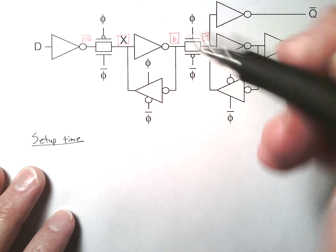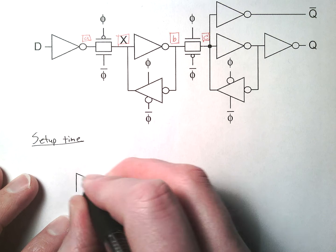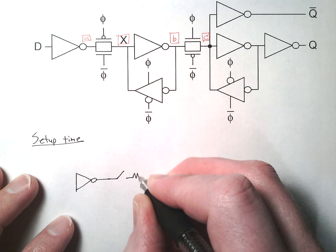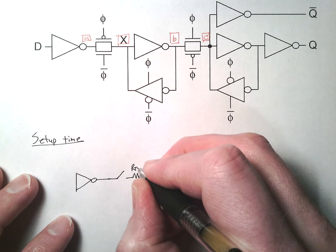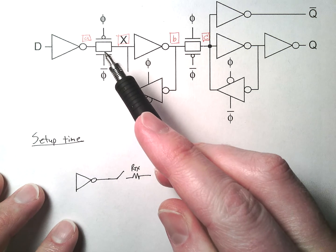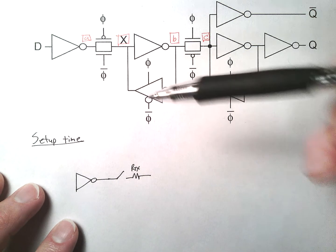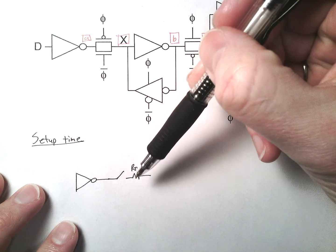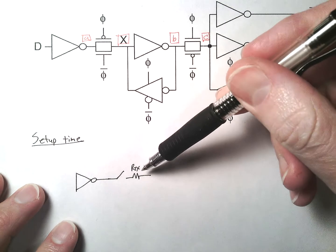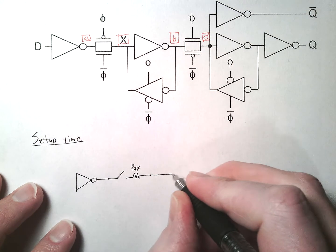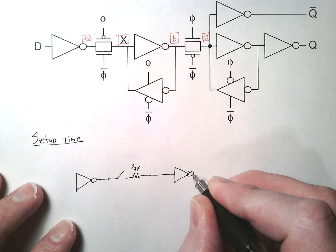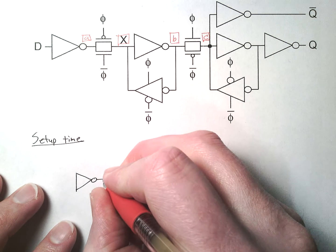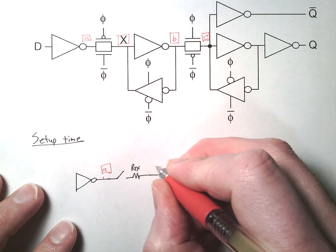I'm going to redraw this as a circuit that looks like this. We've got our original inverter, and then we have a switch and a resistor. This is our transmission gate — just a switch with a series resistance. It's an NMOS and a PMOS in parallel. That resistor is not a linear resistor, but for our purposes right now we can view it just as a resistor. We have our forward inverter here, which in one way is buffering the X node. I'll label my nodes: this is node A, and this is node X.